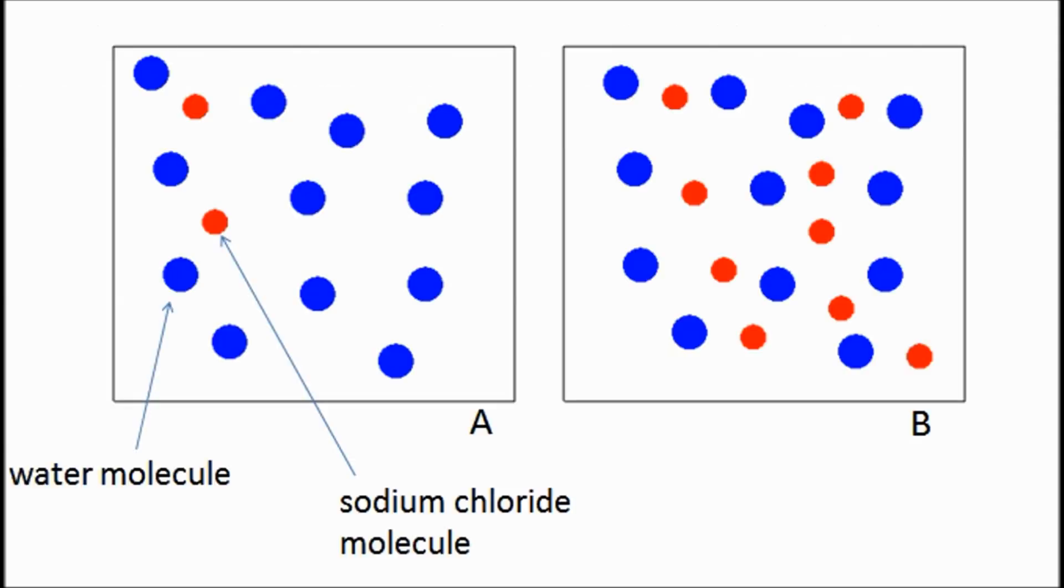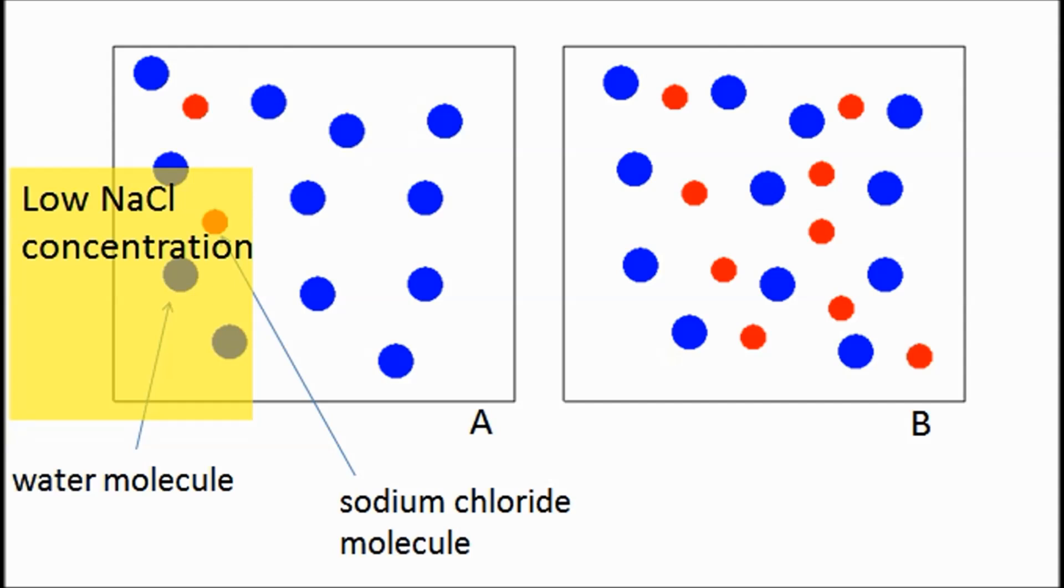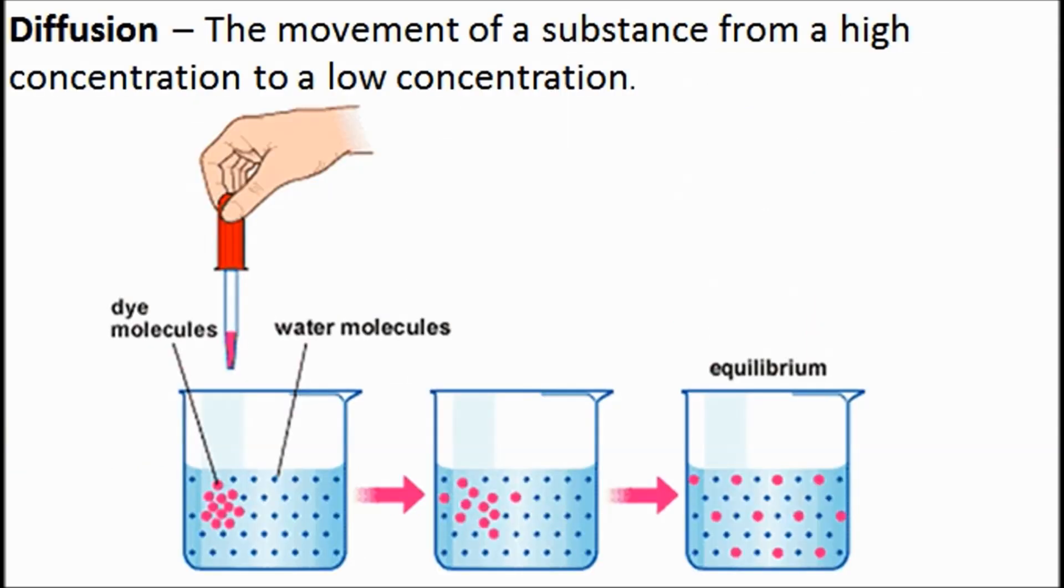So before we go on, let's just make sure we know what we're talking about when we mean concentration. We've got here two solutions, A and B. A has only two solute particles in it, two sodium chloride particles and lots of water. Same amount of water here, but a lot more solute particles. So we say in A, we have a low sodium chloride concentration. And if the sodium chloride concentration is low, then it's more water, it's more dilute. So solute concentration and dilution are opposites. Over here, we've got high solute concentration, which means the dilution must be low.